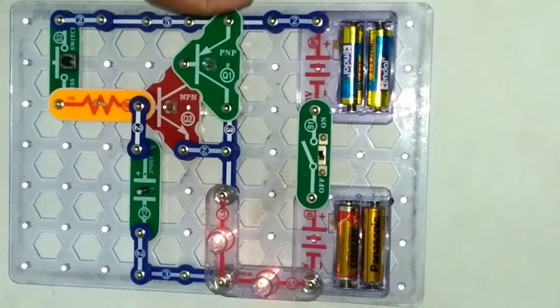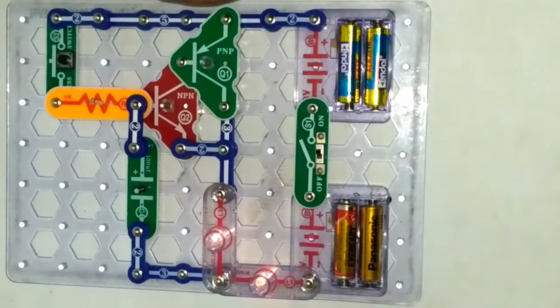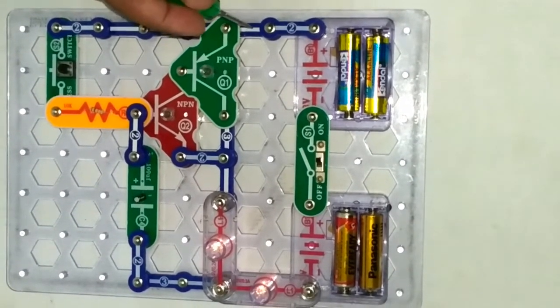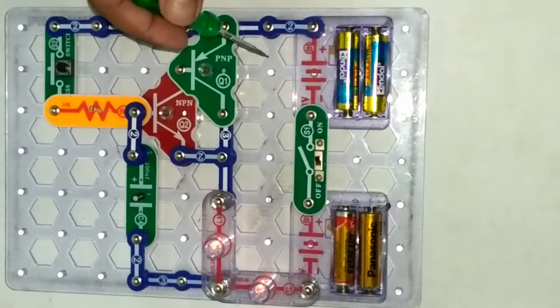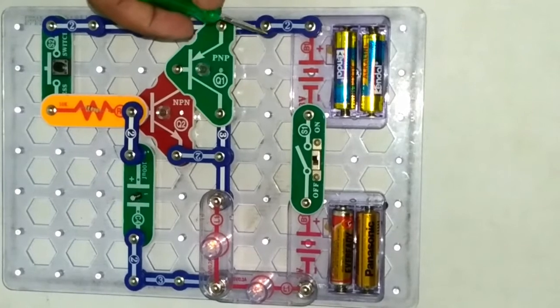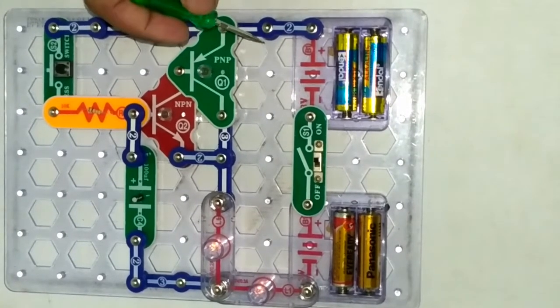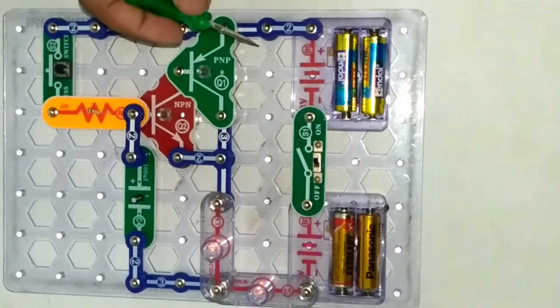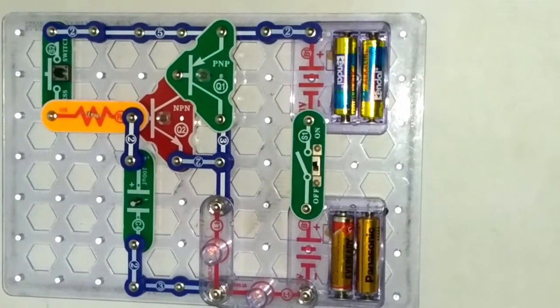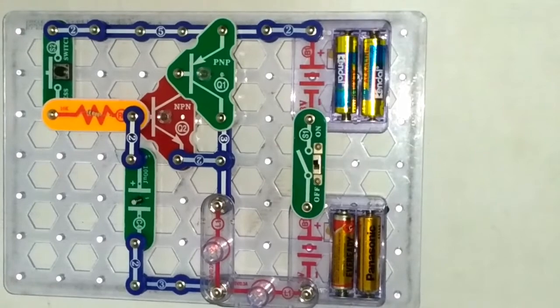This is how it happens. In the end, it will completely turn off. So this is the snap circuit of delayed action lamp. Thank you so much.